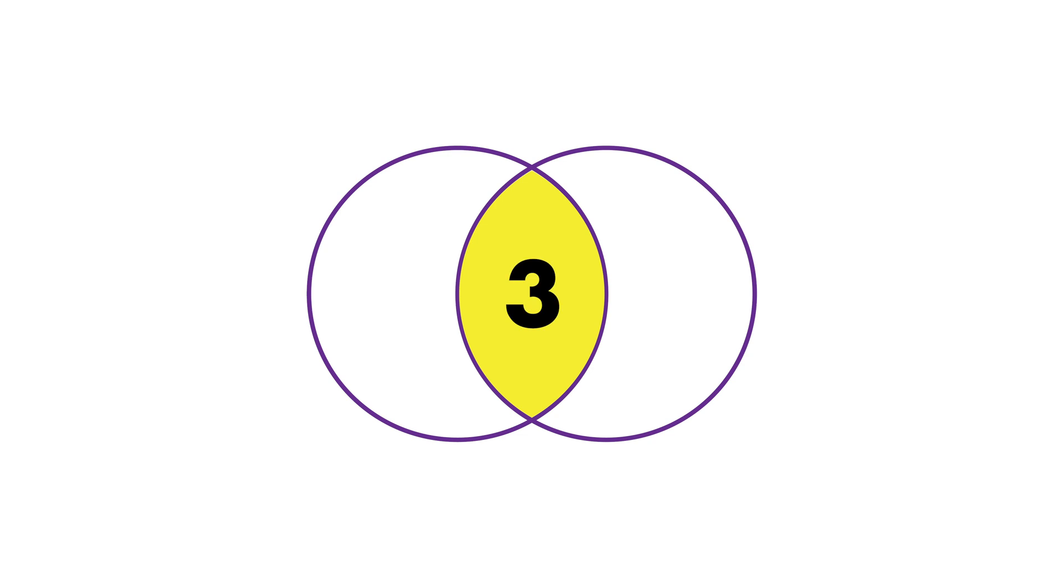The circle on the left is one, the circle on the right is two, and then the intersection of the two circles, or the vesica piscis, is number three.